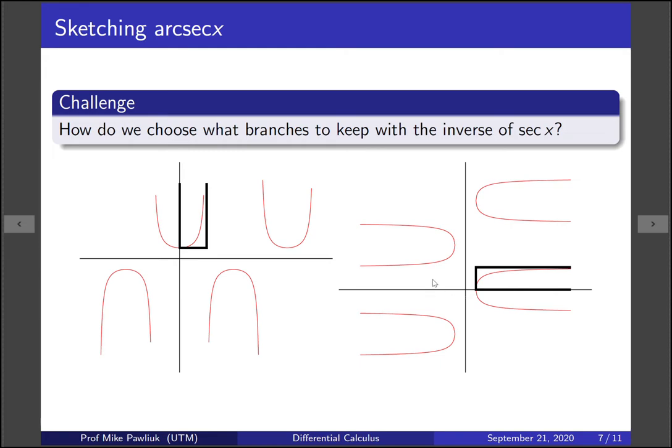But now what do we do over here? Which of these things do we keep so that it passes the vertical line test? Here it's not so clear. We could choose this one if you want. So if we only kept this part it would pass the vertical line test.